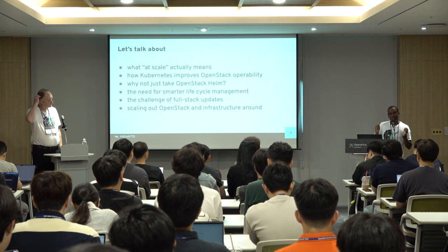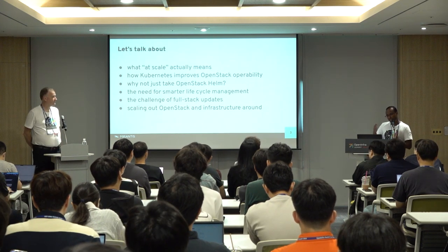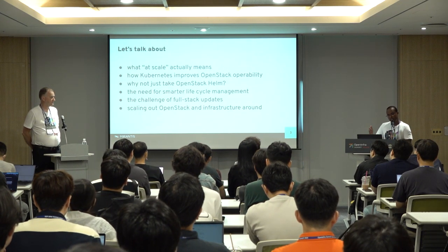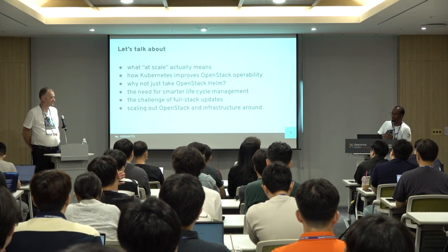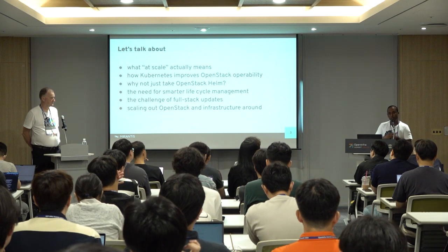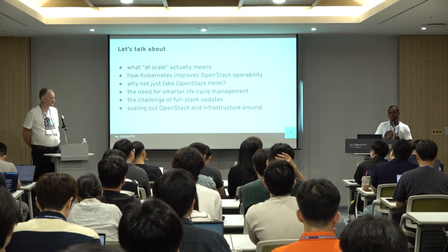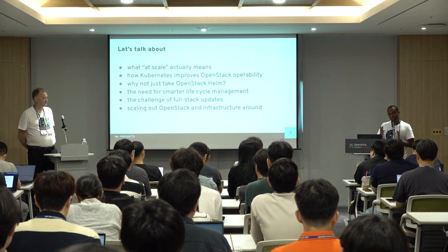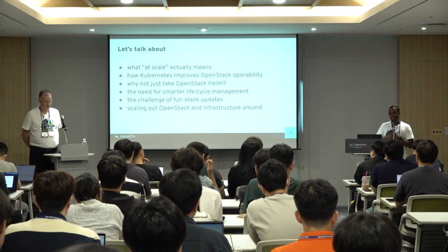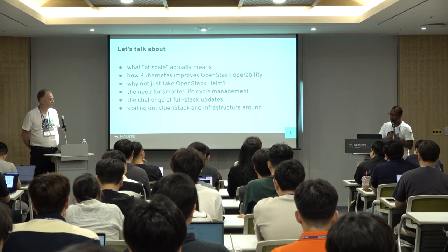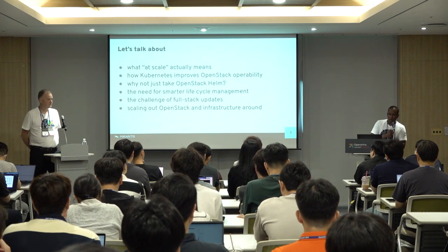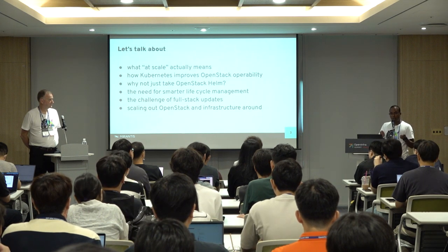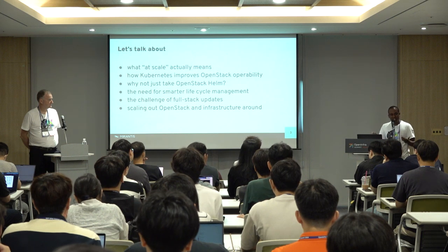We will also talk about how we use Kubernetes to help operate OpenStack. As I said, we've been doing OpenStack for more than ten years. Kubernetes is one of the solutions we decided to use to reduce the complexity of managing OpenStack. We will explain why OpenStack Helm alone is not sufficient, and how Kubernetes has helped to create a smart lifecycle management system to fix challenges around updates and scaling out of OpenStack.